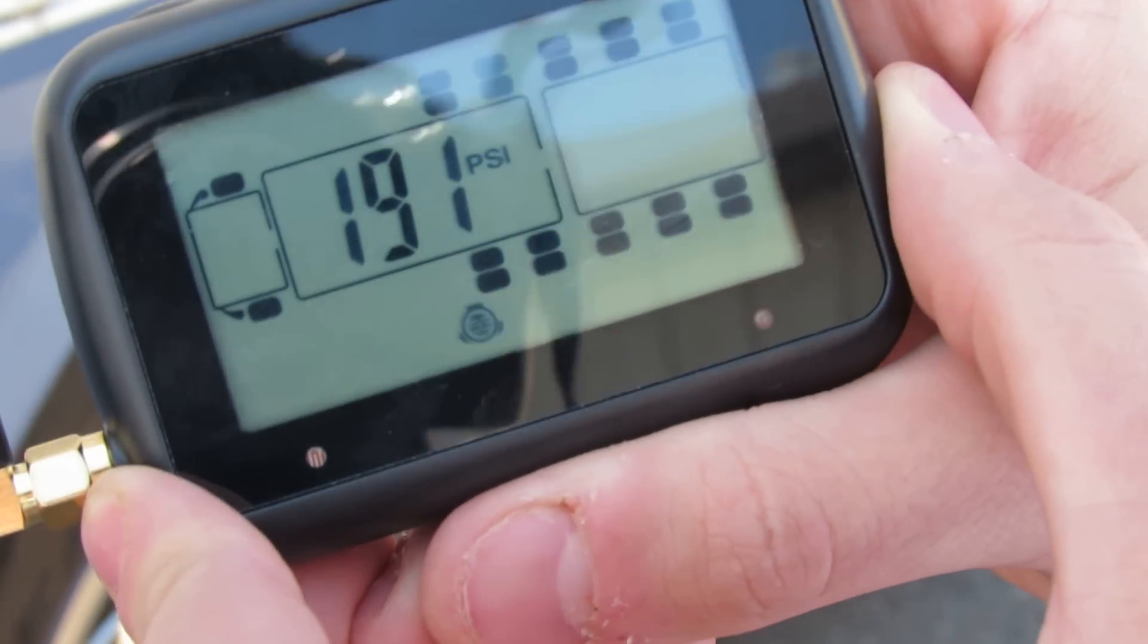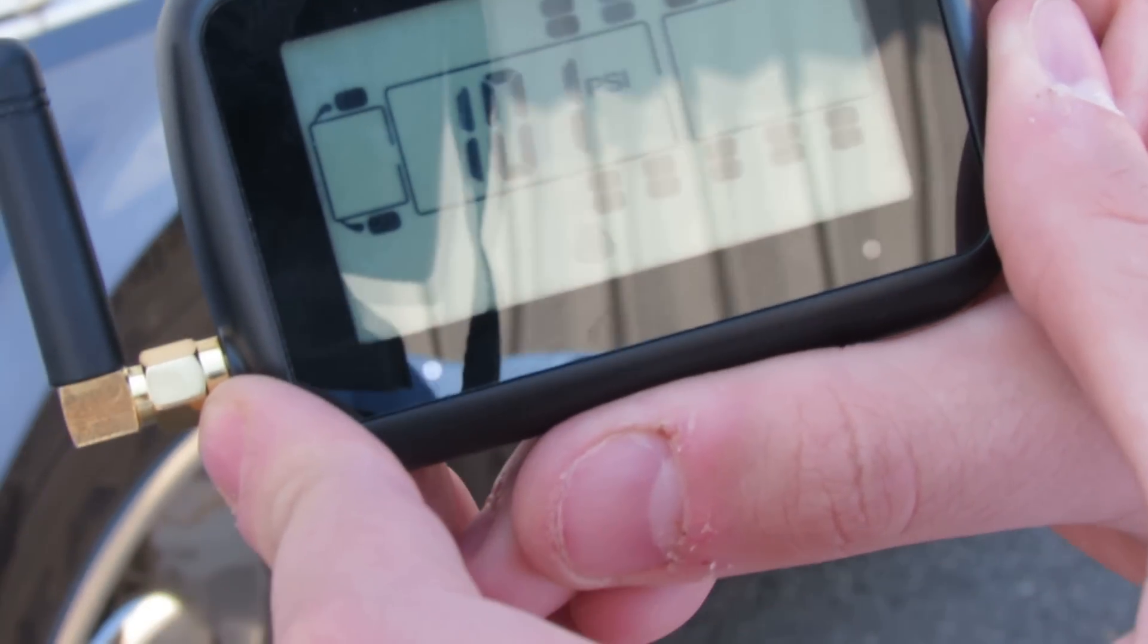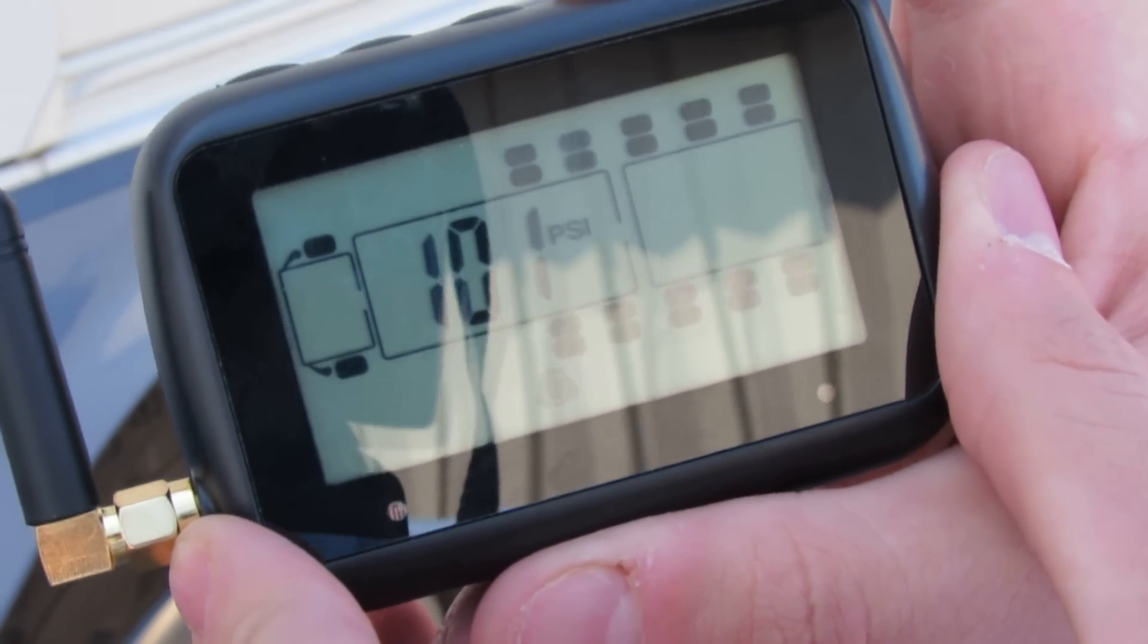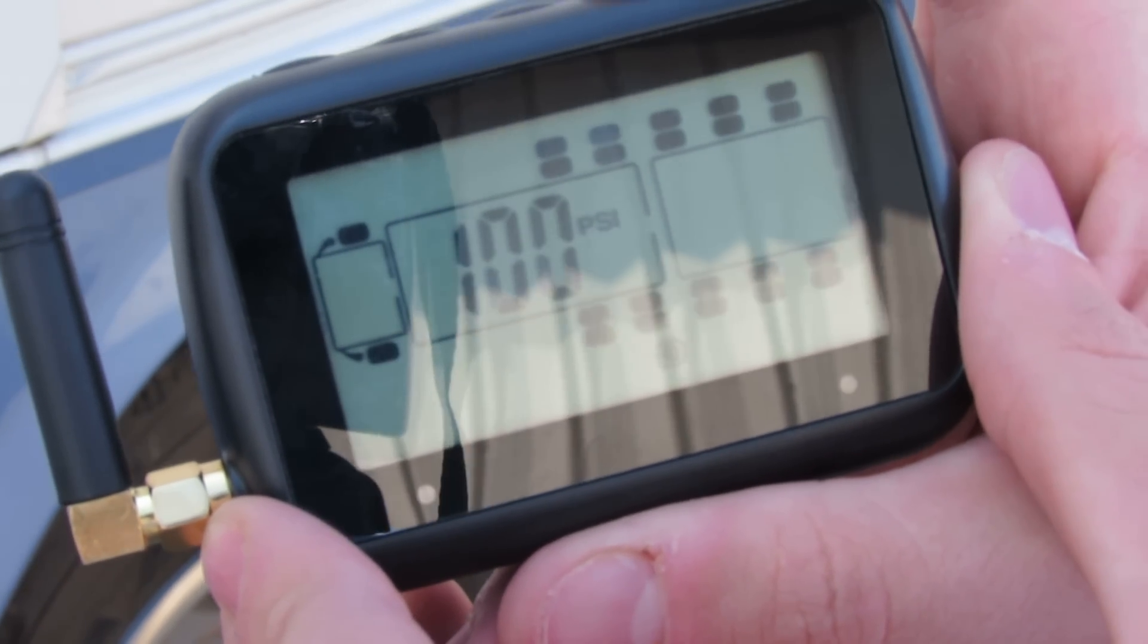Using the plus and minus buttons here, you will want to go to where your high pressure is. Once you get to the mentioned location at 101 PSI, mode over to low pressure.